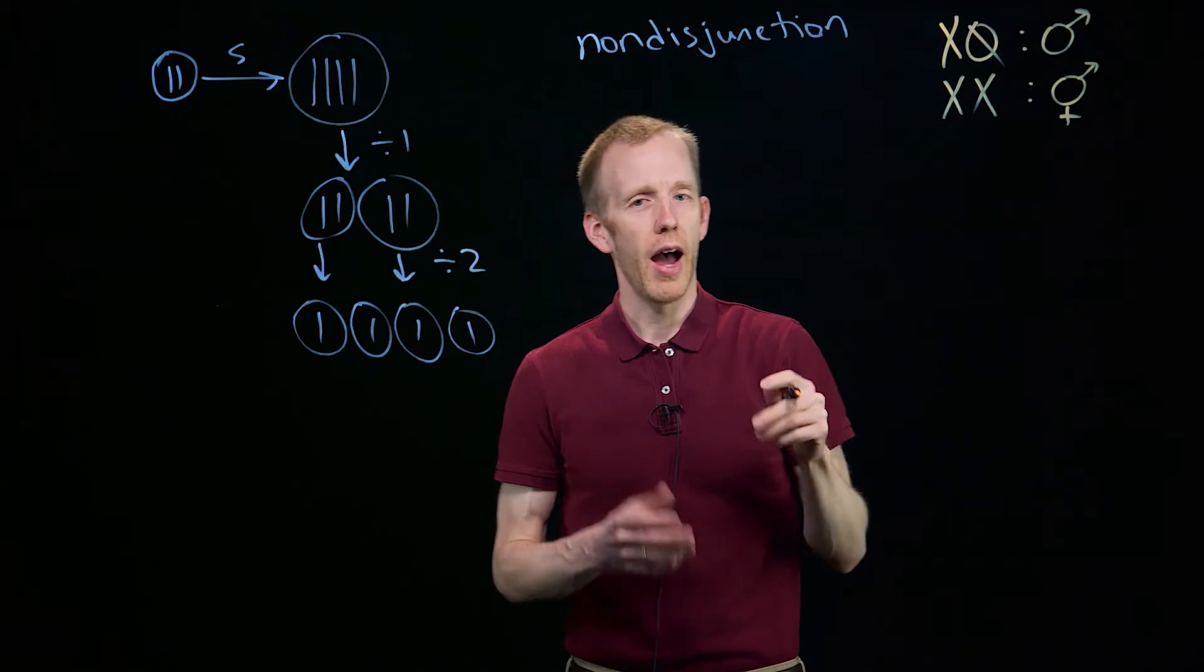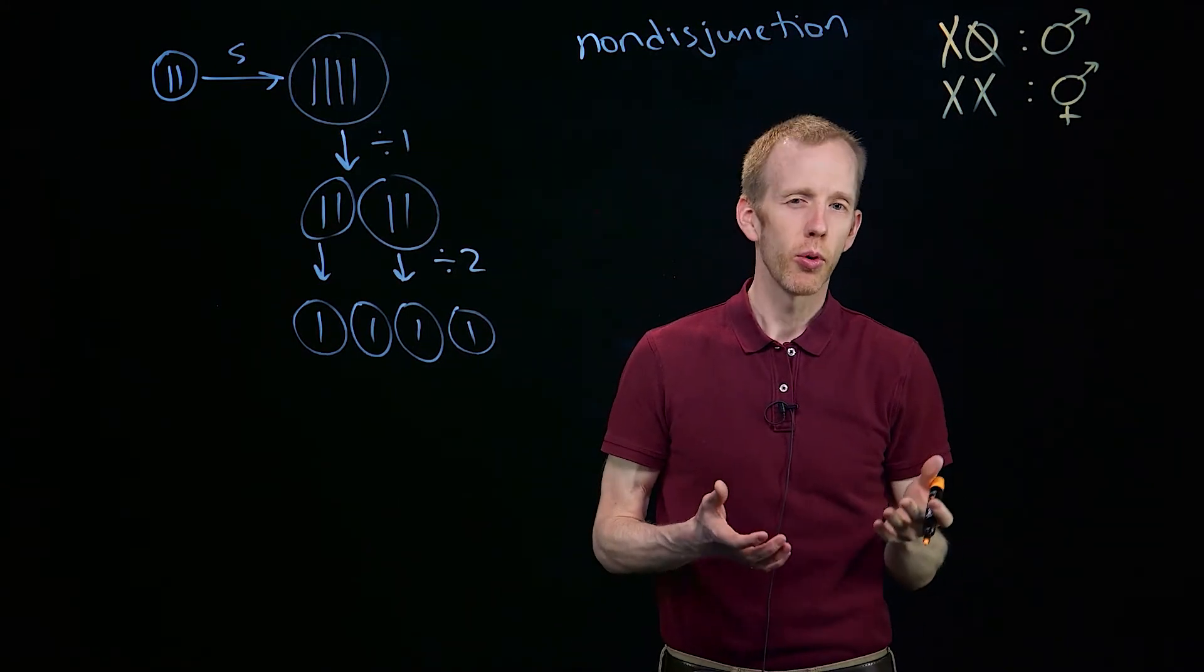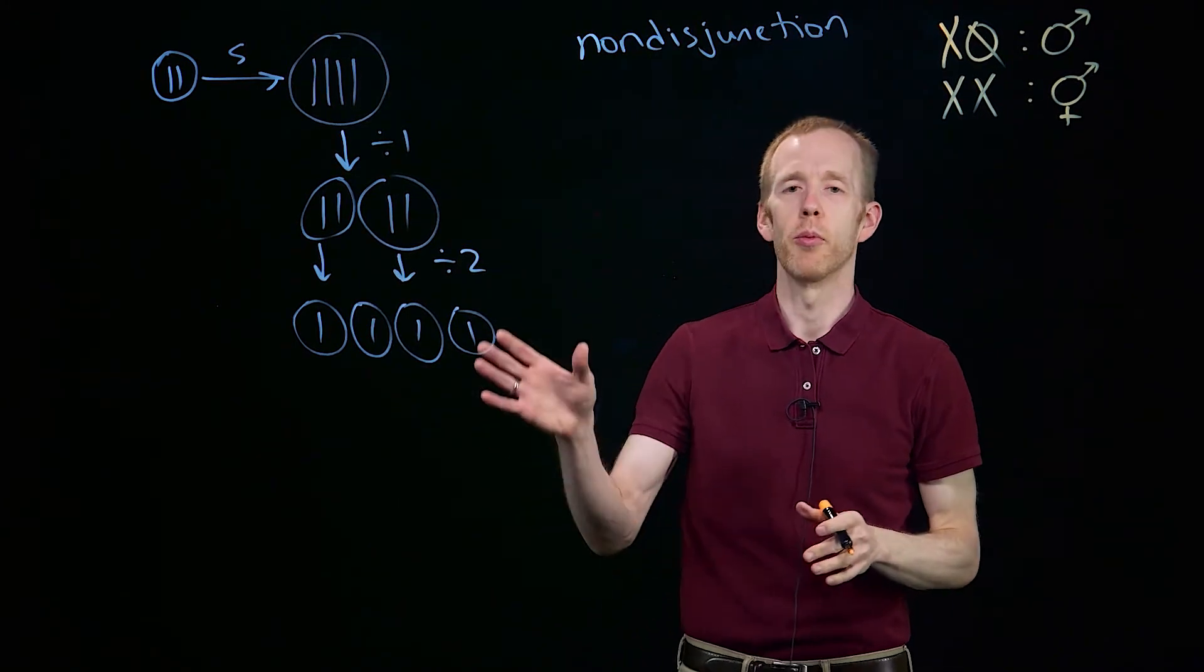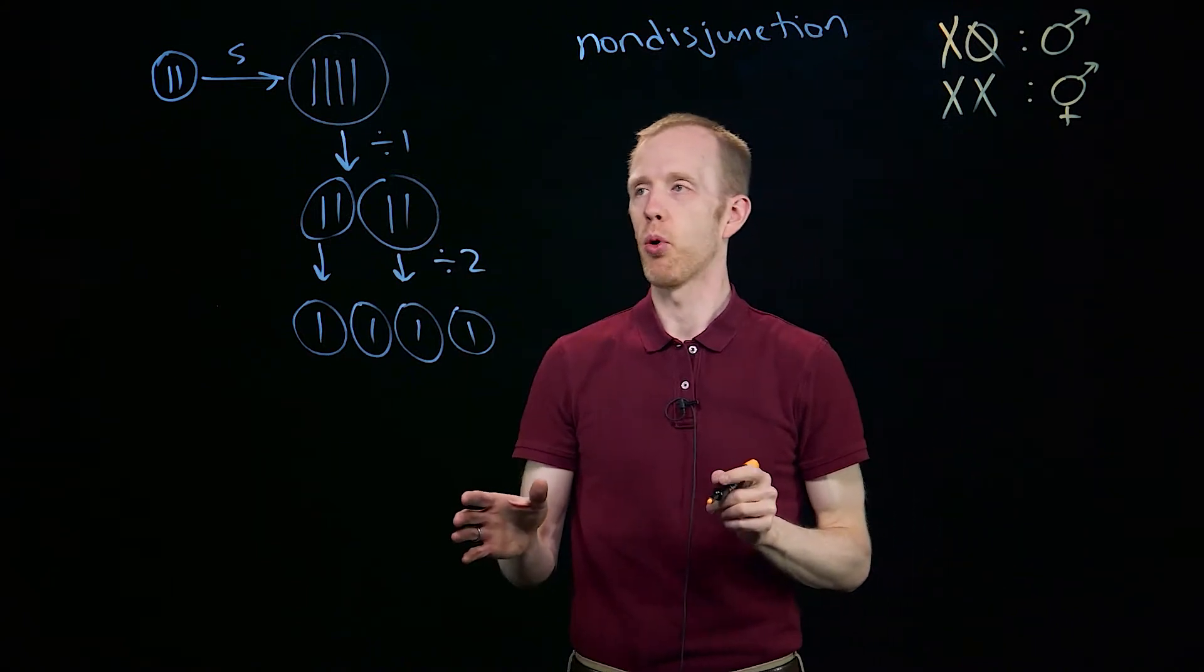And so you might be wondering how you get an organism that's diploid but only has one copy of a chromosome. That's where non-disjunction is important.